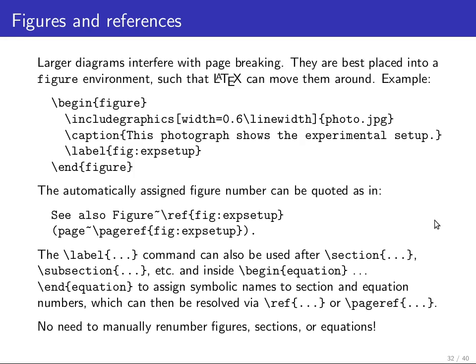One problem with including tables, photographs, and diagrams is that they interfere with page breaks. If a photograph or table starts near the end of a page, it would look quite ugly if LaTeX automatically inserted a lot of white space that could be filled with other text. The solution is to allow larger images to float around your text so that LaTeX can automatically decide where to place the figure — implemented using the figure environment.